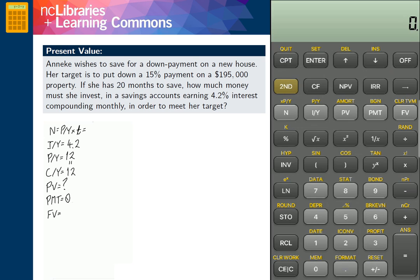Since we are not making regular payments into this account, we set PMT equal to 0. And we compute N by taking the product of PY and T. PY, of course, is 12. And we convert 20 months into years by dividing by 12 the number of months for an end result of 20.